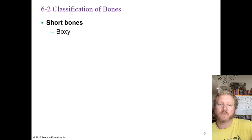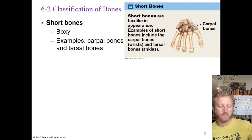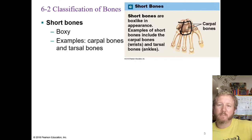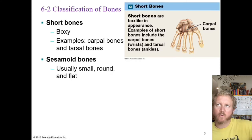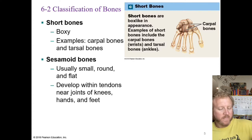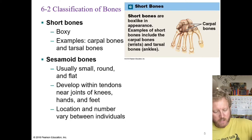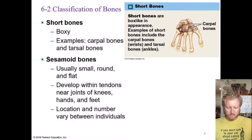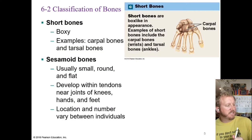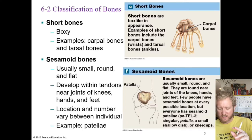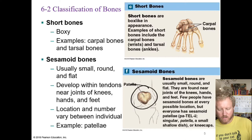Short bones are boxy — these would be like your carpals in your wrist and the tarsals in your ankles. Sesamoid bones are usually small, flat, and round; they develop within tendons and are typically located around joints like the knees, hands, and feet. An example most people have are the two patellae — your kneecaps — which are short, round, and relatively flat.